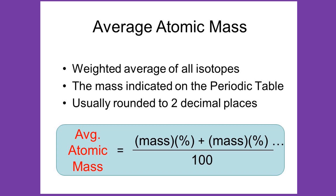The average atomic mass, sometimes called atomic weight, of an element is the weighted average mass of the atoms in a naturally occurring sample of the element. Average masses are generally expressed in unified atomic mass units (U) or atomic mass units (AMU), where 1 AMU is equal to exactly 1/12 the mass of a neutral atom of carbon-12.